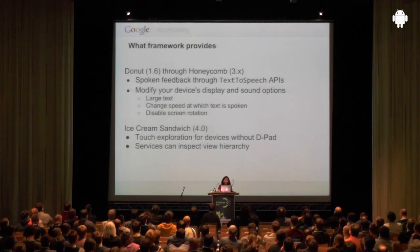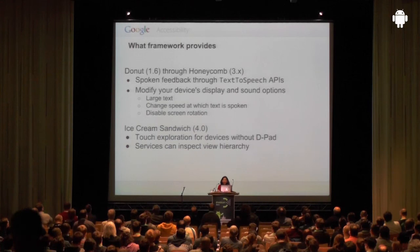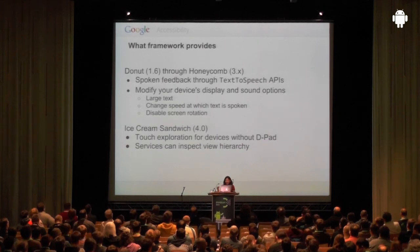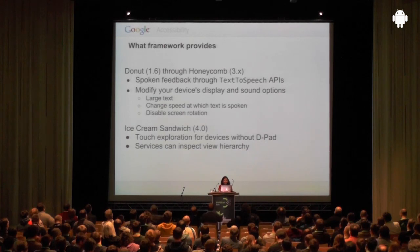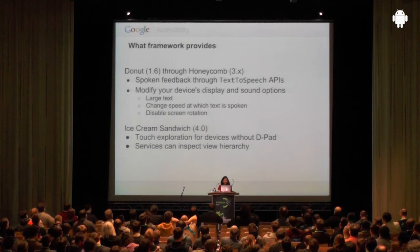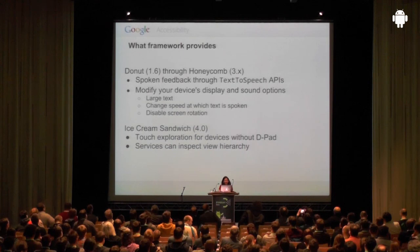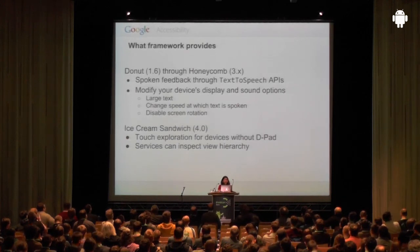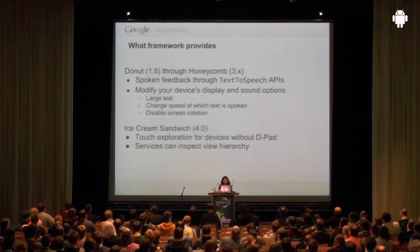We have been committed to accessibility from the beginning, adding features and bug fixes across all Android versions starting from 1.6. Prior to Ice Cream Sandwich, the main feature was the text-to-speech API — when a user uses a D-pad, keyboard, or trackball, any focusable element provides spoken feedback. You can adjust accents, volume, and speech speed. Other features include large text, which increases text size and is great for people with visibility problems, and the ability to disable screen rotation.